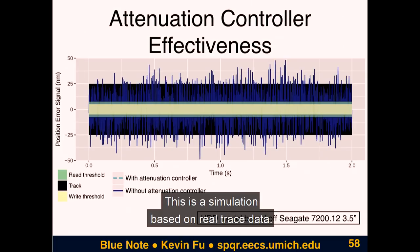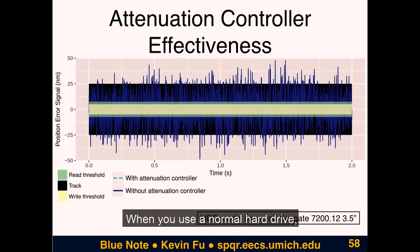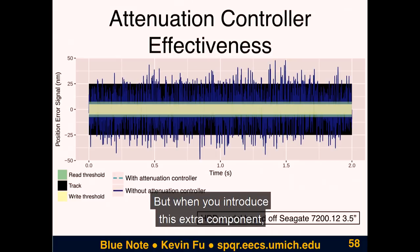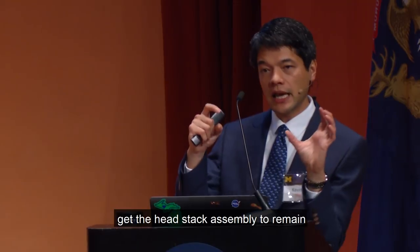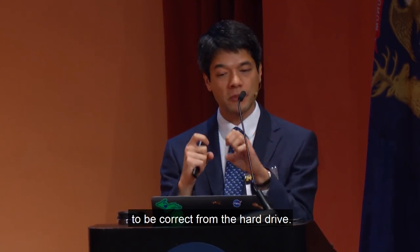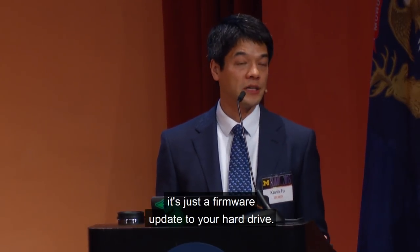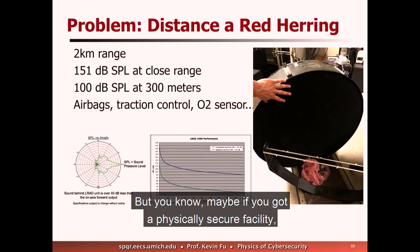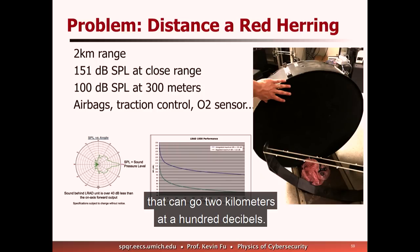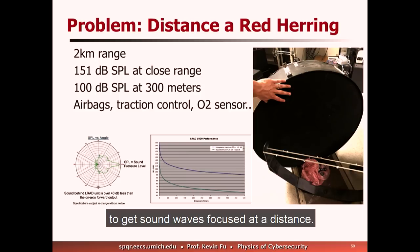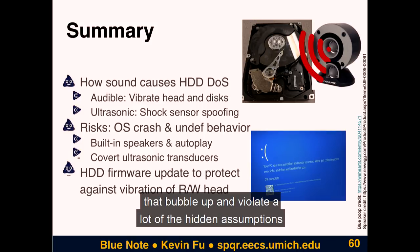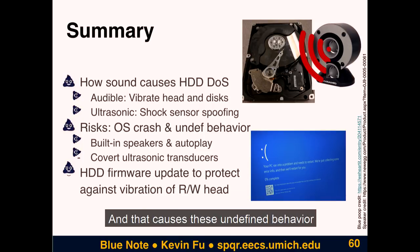This is a simulation based on real trace data. With a normal hard drive, the blue line for the needle position is way outside the thresholds for reading and writing to the point where I/O just stops. But when you introduce this extra predictive component, we're able to get the head stack assembly to remain within the tolerance for correct reads and writes. The cool thing: there's no hardware change at all — it's just a firmware update to your hard drive. As for distance, if the speakers are built into your computer, I don't need to worry whether I'm a mile away or 2,000 miles away. Sound causes weird malfunctions — changes in physics that bubble up and violate the hidden assumptions inside our digital abstractions, causing undefined behavior in operating systems.